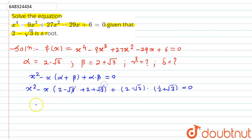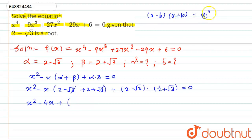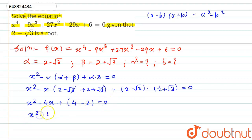The √3 terms cancel out, so 2 + 2 = 4. It becomes x² - 4x plus (2 - √3)(2 + √3). This is of the form (a - b)(a + b) = a² - b², so it equals 2² - (√3)² = 4 - 3 = 1. This gives us x² - 4x + 1 = 0.